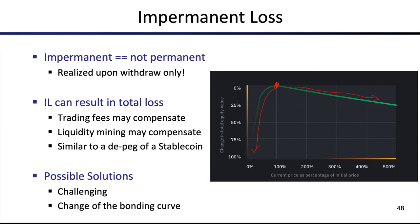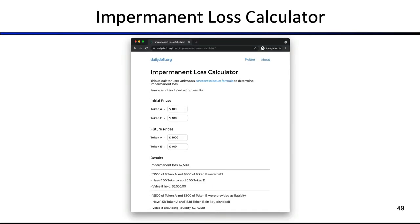The impermanent loss can result in a total loss of funds. Trading fees might compensate for this, but they may not. Liquidity mining can also potentially help. Impermanent loss is similar to a de-peg, but not as significant as a major stablecoin de-peg. To find potential solutions is not simple — you would basically need to change the bonding curve that governs the AMM liquidity. Feel free to check out various impermanent loss calculators online so you can anticipate how significant the loss will be for your particular position. You enter your initial price and future price and it can calculate the amount of impermanent loss, but please do verify those numbers yourself.